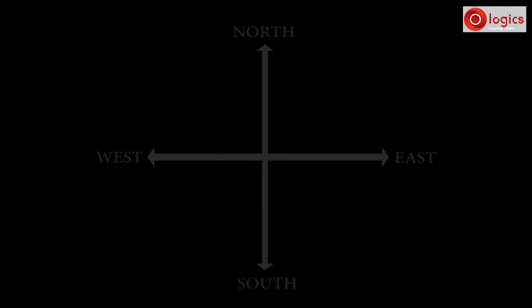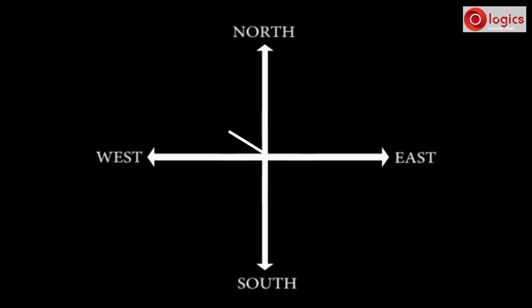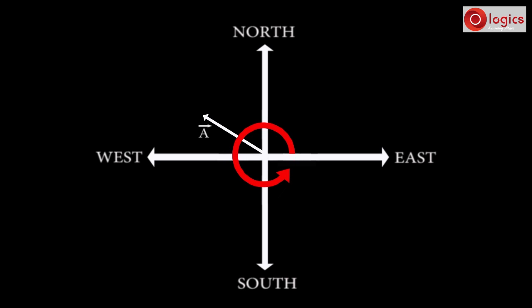Now let us see the second type of convention. Let's draw a vector from north to west direction. In this convention, east direction is taken as the reference for angle measurements, and the angle of rotation is in the counter-clockwise direction. Here, the vector makes a 140-degree angle from east direction. So the direction of this vector is 140 degrees.